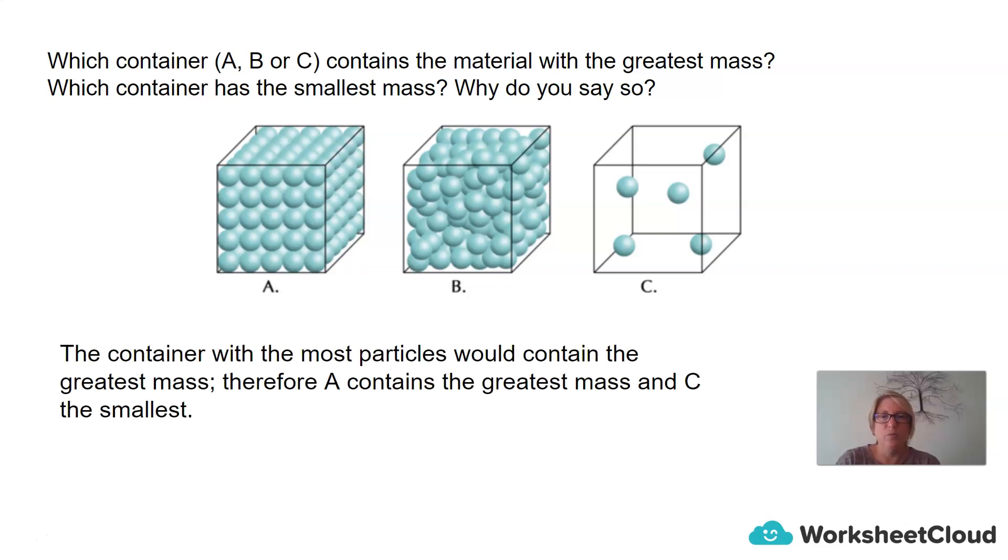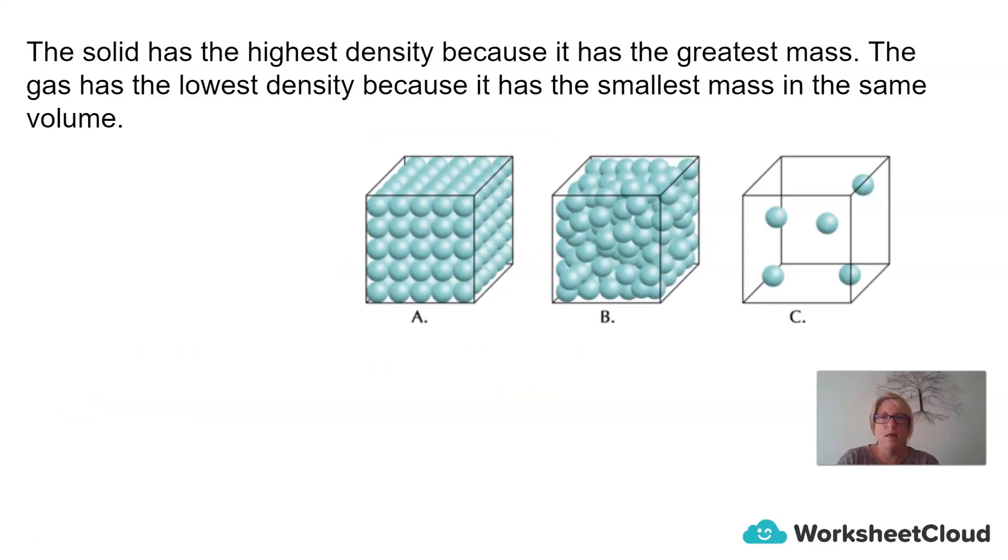The container with the most particles would contain the greatest mass. Therefore, A has the most particles and will contain the greatest mass. C has the least number of particles and would have the smallest number of mass. The solid has the highest density because it has the greatest mass. And gas has the lowest density because it has the smallest mass in the same volume.